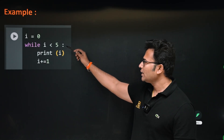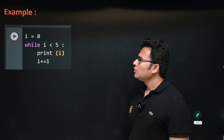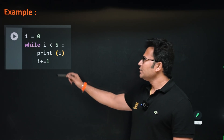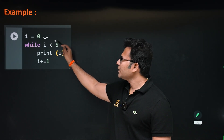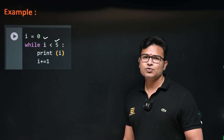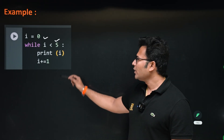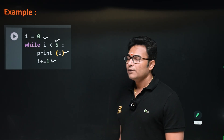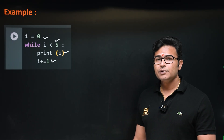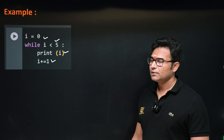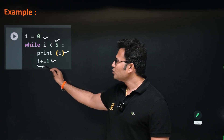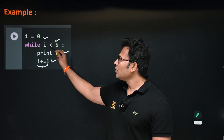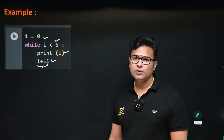Take this example: i equal to 0, while i less than 5, print i, i equal to i plus 1. What happens is i starts from zero and goes up to four — it won't touch five. We print all those values and every time we increment i. This line is very important; many people forget to put 'i = i + 1'. If they don't, i will always be zero, always less than five, and it becomes an infinite loop.